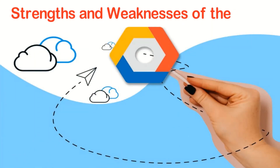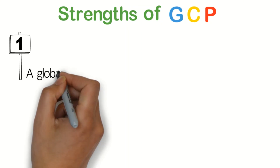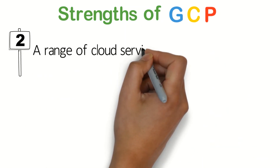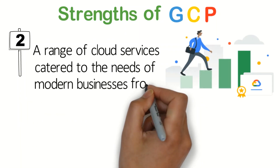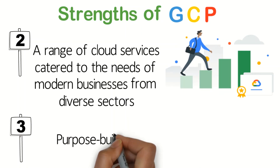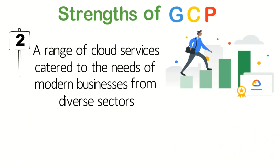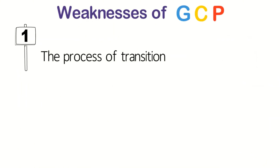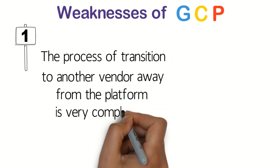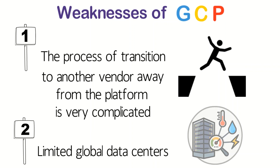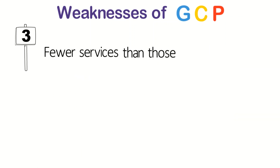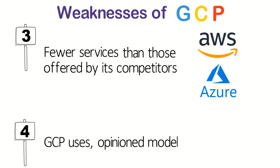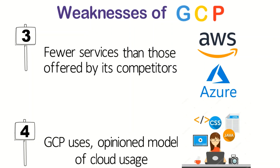Strengths and Weaknesses of GCP. Strengths: a global backbone cloud network that ensures fast, consistent and scalable performance; a range of cloud services catering to the needs of modern businesses from diverse sectors; purpose-built for cloud native businesses; and promotes team collaboration and communication. Weaknesses: the process of transition to another vendor away from the platform is very complicated; limited global data centers; fewer services than those offered by competitors like AWS and Azure; and GCP uses an opinion model of cloud usage mostly confined to software developers only.